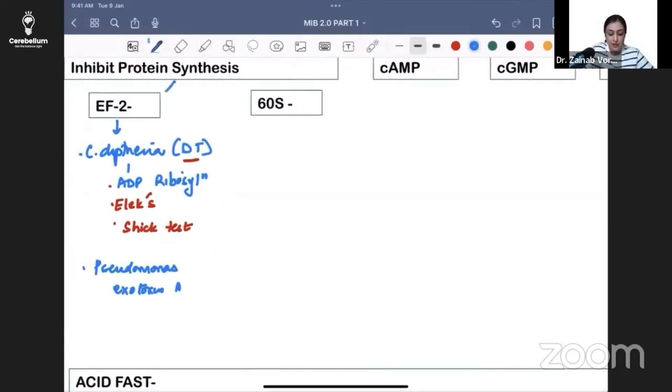Protein synthesis by 60S: Shigella toxin. Shigella produces Shiga-like toxin, also called verotoxin, produced by EHEC (enterohemorrhagic E. coli). What is the special species of EHEC that's important? That is O157:H7. Do you see a pattern here?